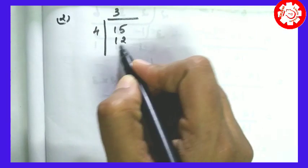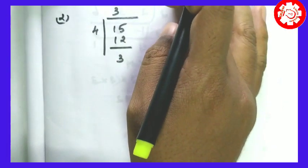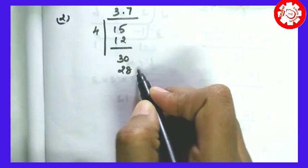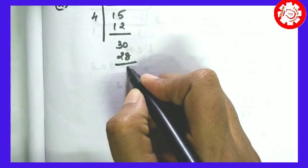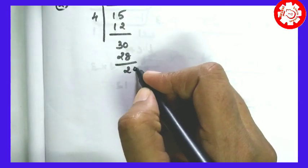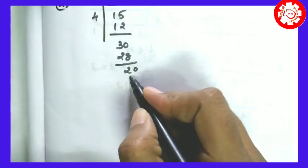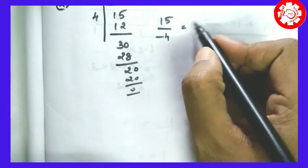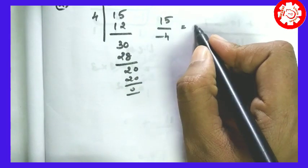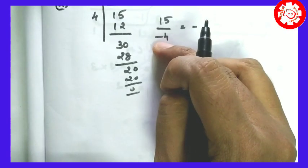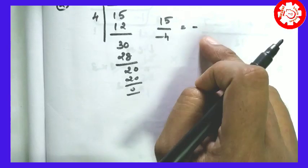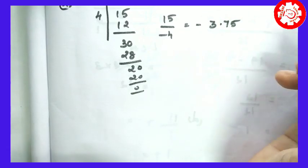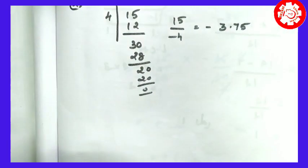4 into 3 is 12, remainder 3. Then 30: 4 sevens are 28, remainder 2. Then 20: 4 fives are 20, remainder 0. So the decimal value of 15 by 4 is 3.75. Now, the numerator is minus and the denominator must be positive. So the decimal form of 15 by minus 4 is minus 3.75.